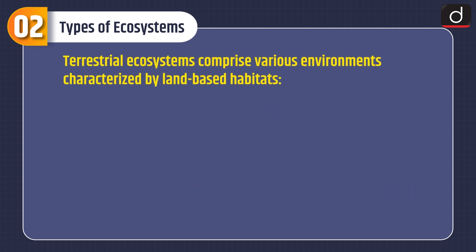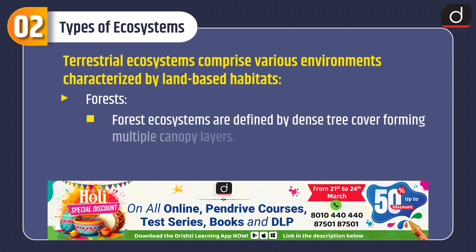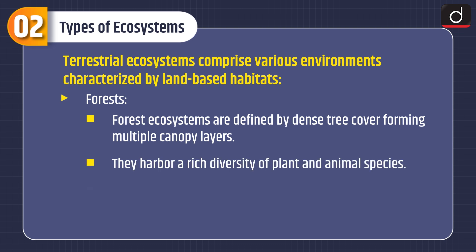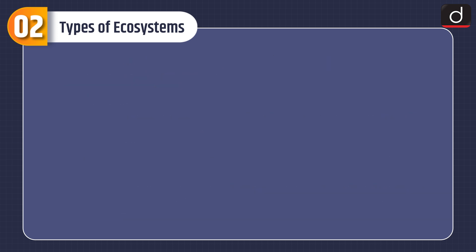Next, terrestrial ecosystems comprise various environments characterized by land-based habitats. First is forest. Forest ecosystems are defined by dense tree cover forming multiple canopy layers and harbour a rich diversity of plant and animal species. Forests including tropical rainforest, plantation forest and temperate deciduous forests support approximately 300 million different species.